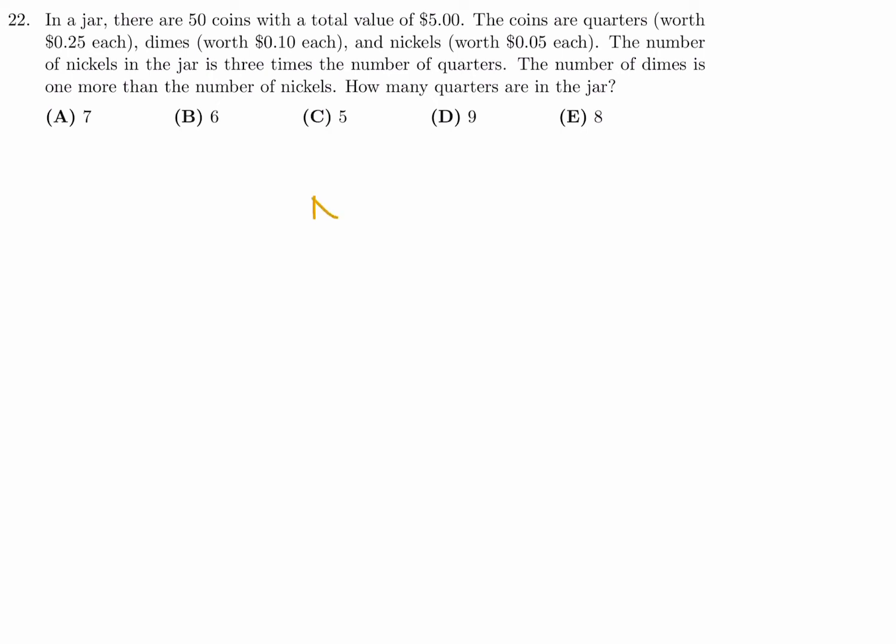Okay, well, from the question, we are told that n is equal to 3q, where n is nickels, q is quarters. And d is equal to n plus 1, where d is dimes. And, therefore, that's 3q plus 1, right? Because n is 3q. And then we're told there's 50 coins. So if there's 50 coins, n plus d plus q is equal to 50.